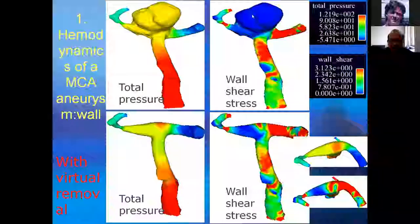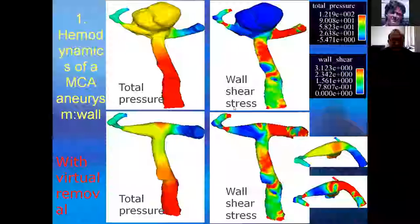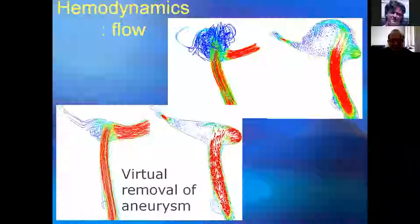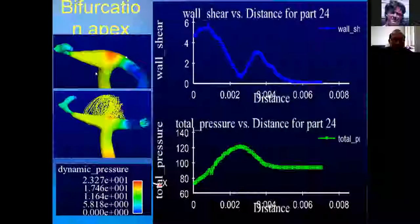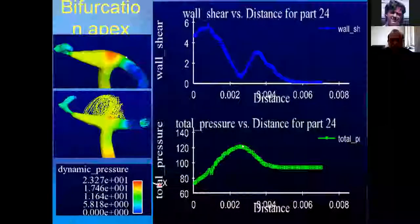Compared with the aneurysm wall, the shear stress is very high and total pressure is also very high. This is the blood flow coming into the aneurysm and also on the bifurcation wall. We draw a line across the bifurcation wall and it shows the shear stress and also the total pressure profile.